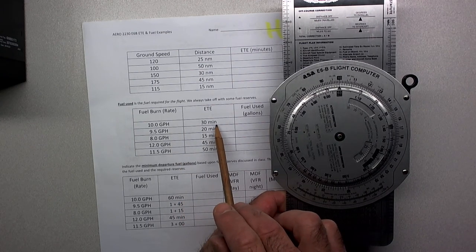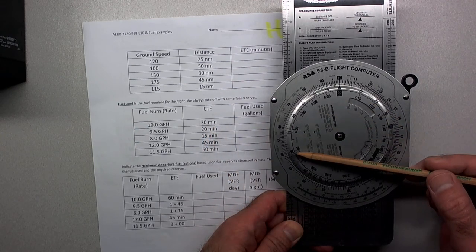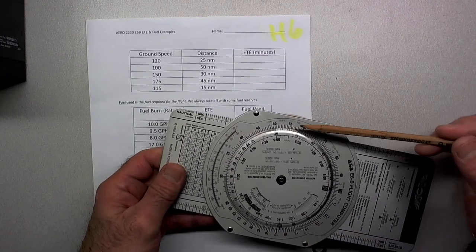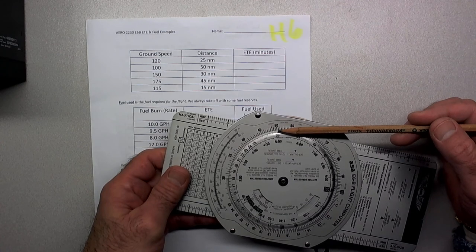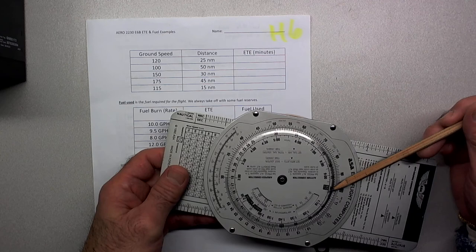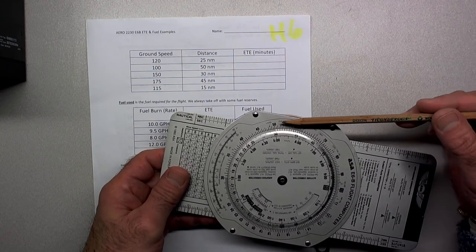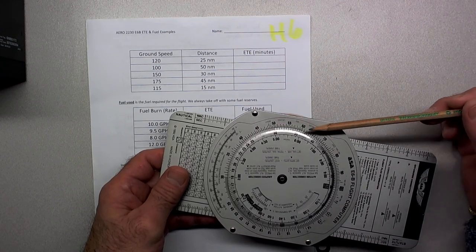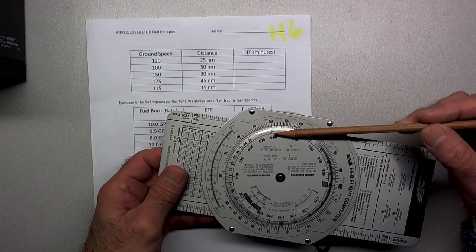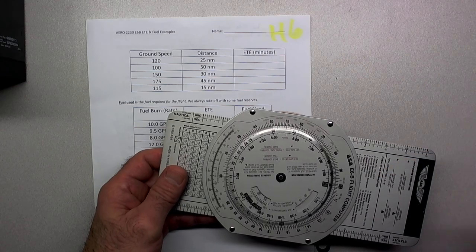Now we need to figure out how many gallons we're going to burn in 30 minutes. We look for time on the inside, 30 minutes. This says we're going to burn 50 gallons in 30 minutes, but wait—we're only going to burn 10 gallons in one hour, so the answer is five gallons. Because we have a limited number of choices for numbers on the outside scale, we have to improvise. This tells us in 30 minutes we're going to burn five gallons.